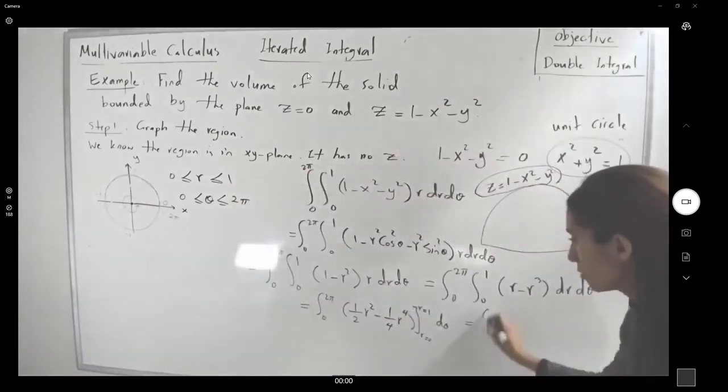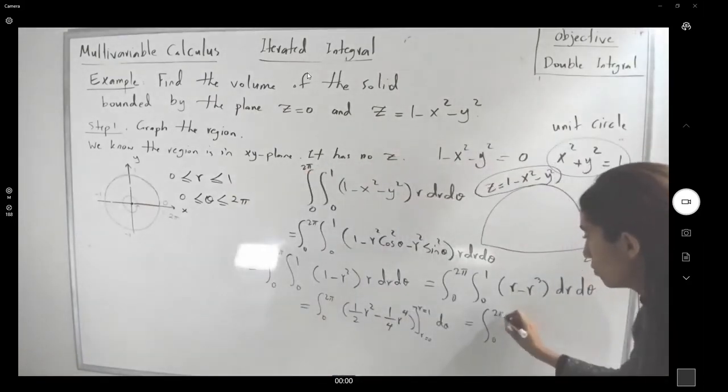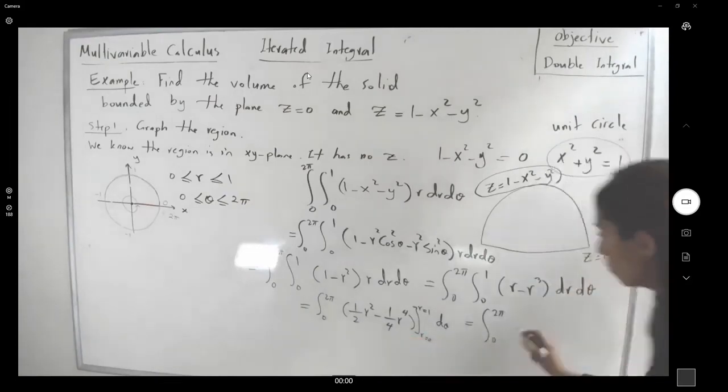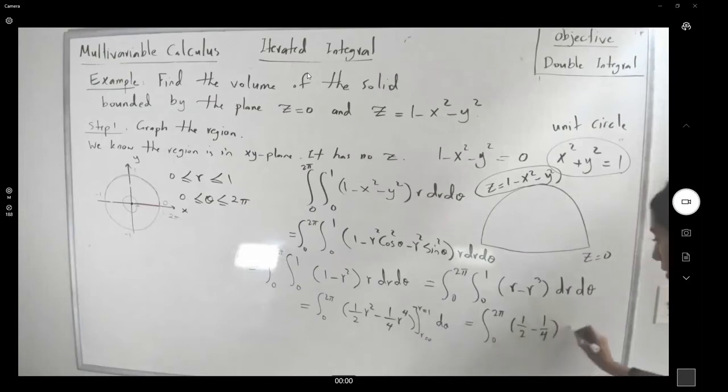So this is equal to the integral 0 to 2π, if I plug in 1, we get a half minus a fourth d theta. Yeah, well, if you simplify that, you get one fourth, 2 divided by 4, you get 4 times 2π, or π over 2.